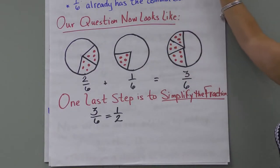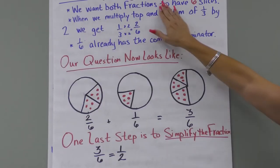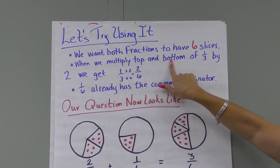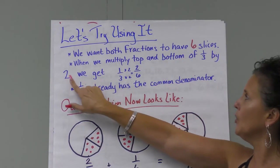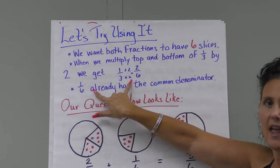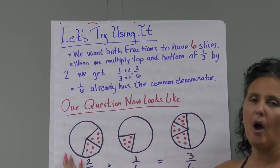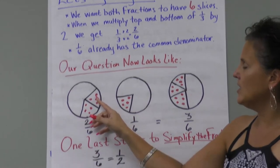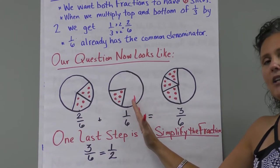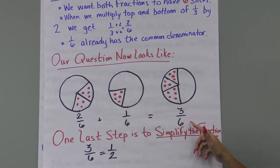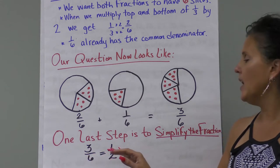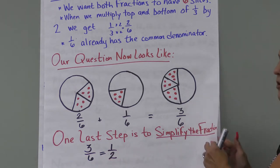Can we do this problem with just six slices? Yes. We multiply the top and the bottom of one-third by two: one times two is two, three times two is six. Now both denominators are six — the lowest common denominator. We've changed one-third to two-sixths. We still have one-sixth. So two-sixths plus one-sixth equals three-sixths. The last step is to simplify: three-sixths reduces to one-half. That's our correct answer using the least common denominator.